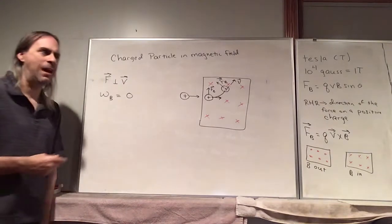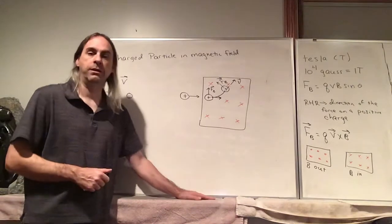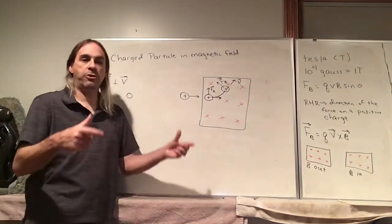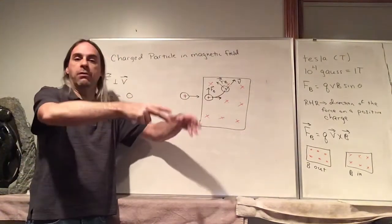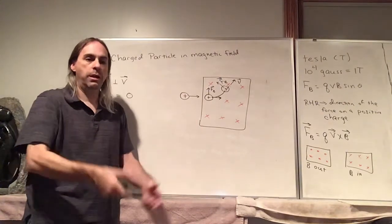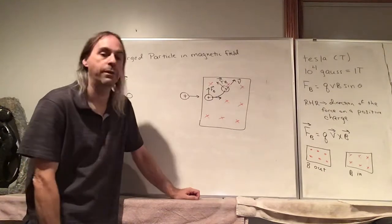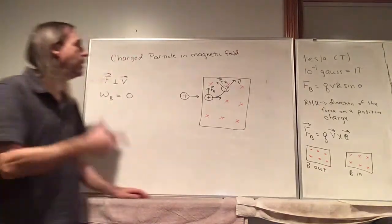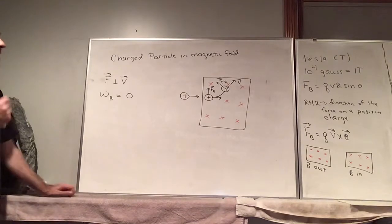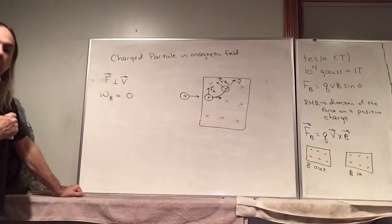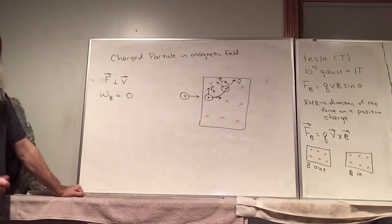This might sound like a strange result. You can picture a crane with a big electromagnet lifting a car — obviously work is being done on the car, and it seems like the magnet is doing it. But the work is not actually being done by the magnetic field itself. Magnetic fields do no work.